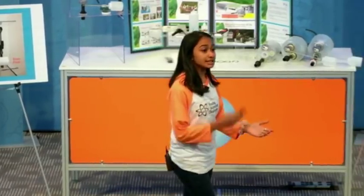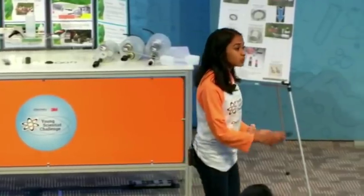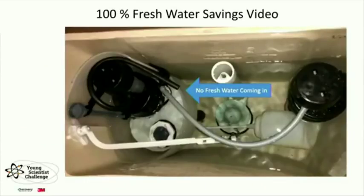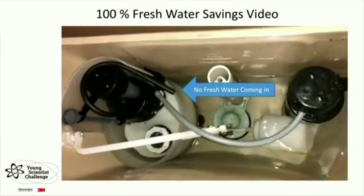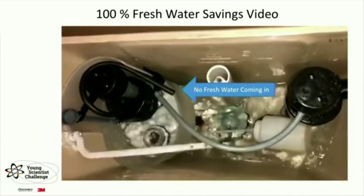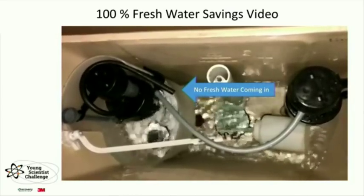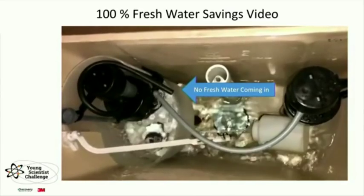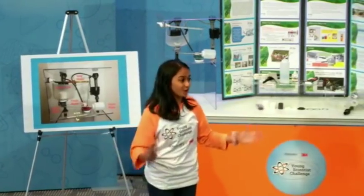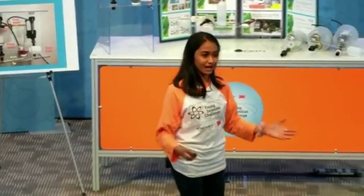What you're going to see is a video recording of a toilet flush using Aria. Pay close attention to the black tube marked as fresh water. As you can see, the gray water rushes into the small tank, but there is no fresh water coming out of the fresh water tube. By lifting the float when flushing, the drain valve closes, which results in 100% fresh water savings. This was one of the biggest accidental discoveries in my entire project.